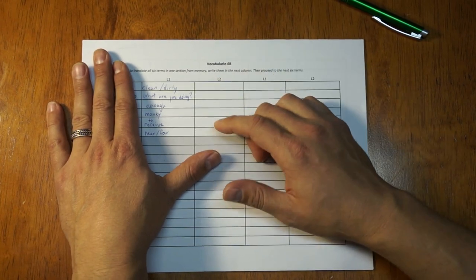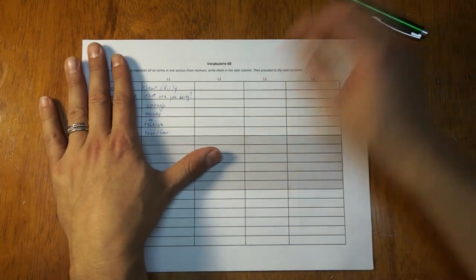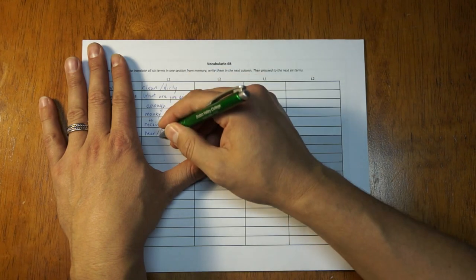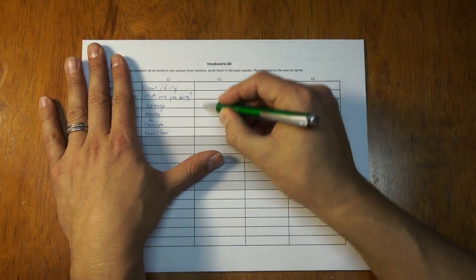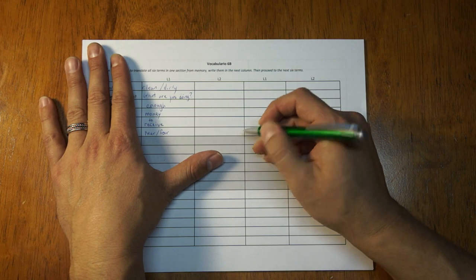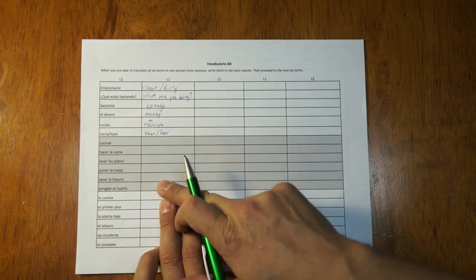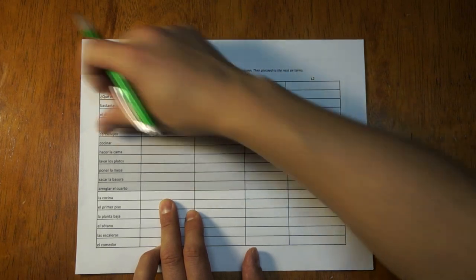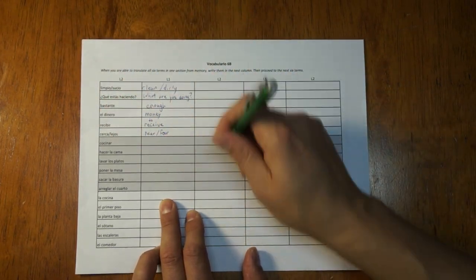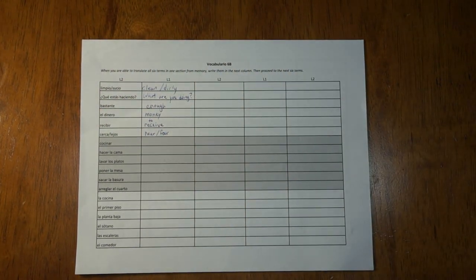When you forget here, no problem. It's right there. You can just look. And then keep going. Again, once you've said them all and are confident that you can write them all, then you will write them all correctly in Spanish. Of course, here I will have written the English translations of these words and then I'm going back again to the Spanish.